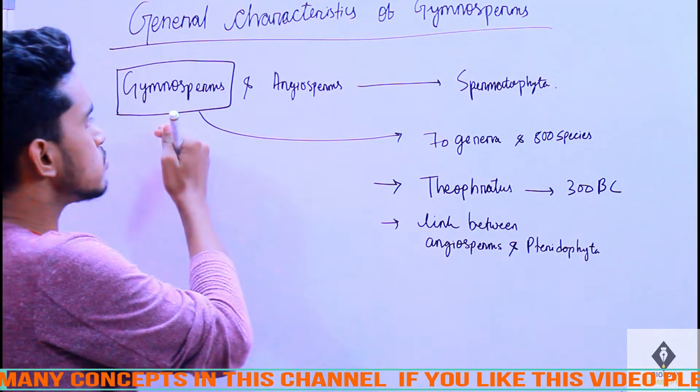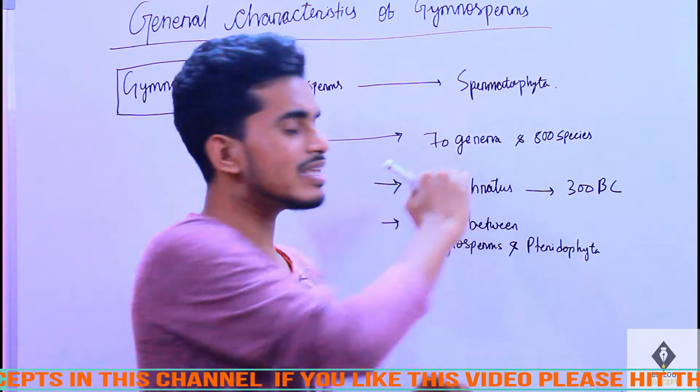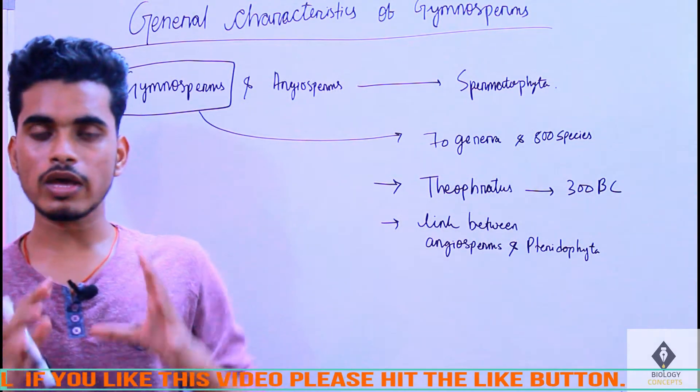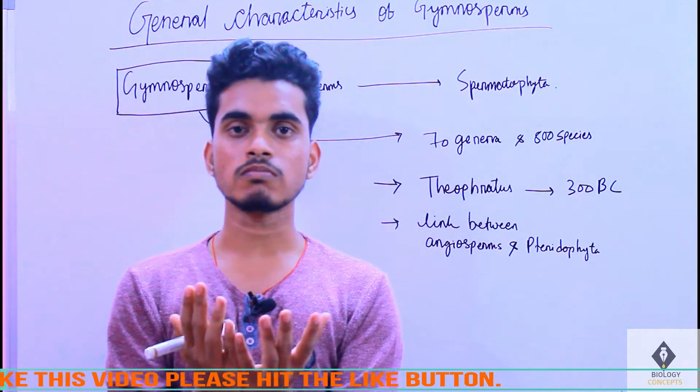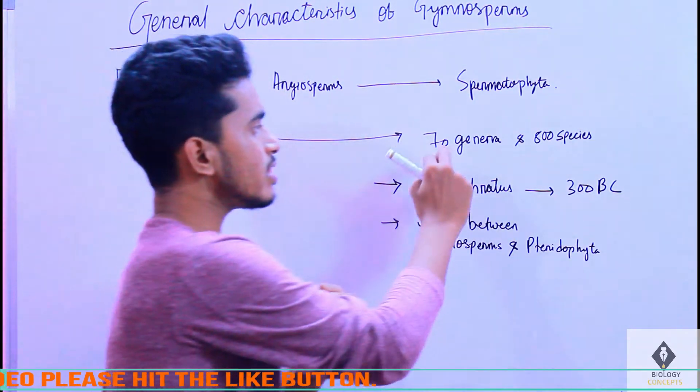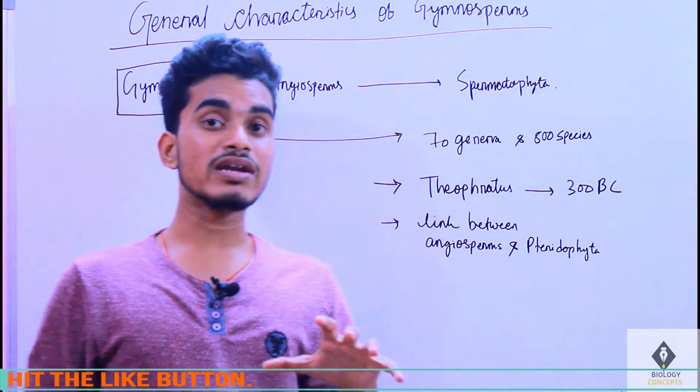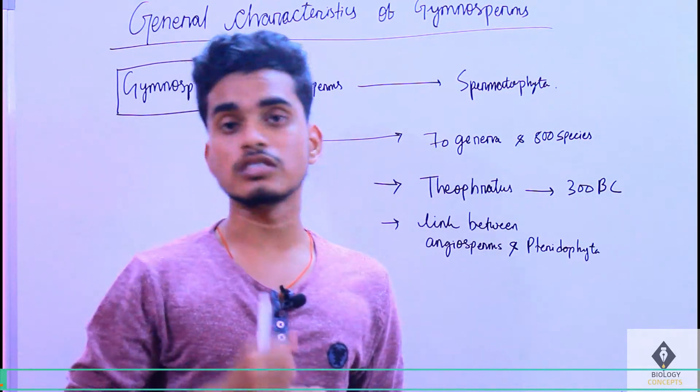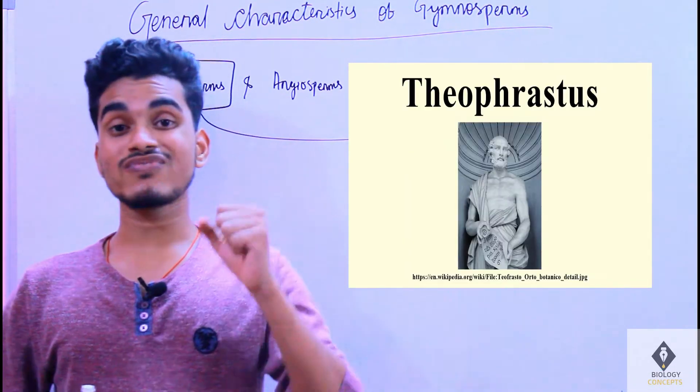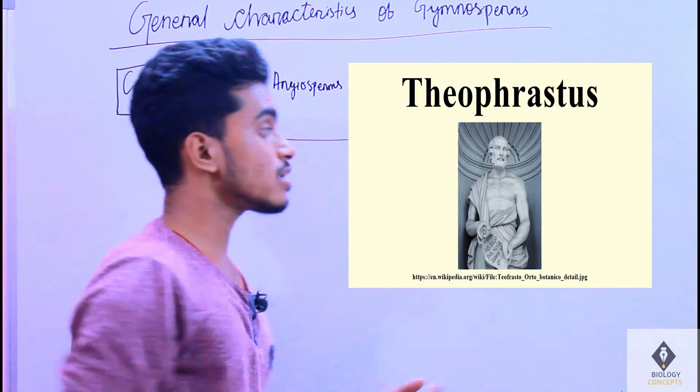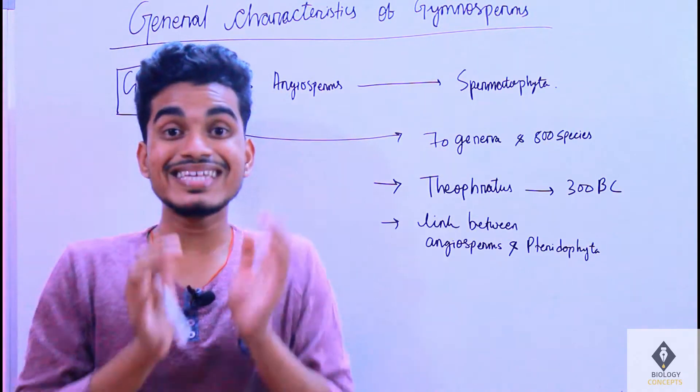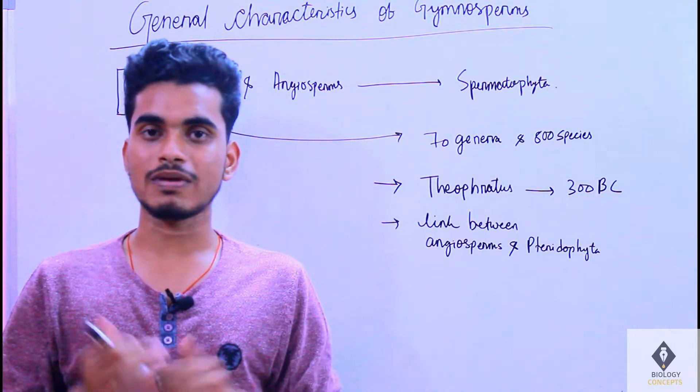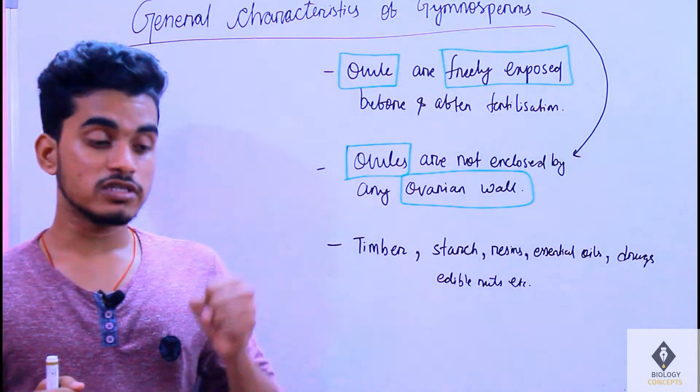Coming to the next point, gymnosperms have 70 genera and 800 species. In whole gymnosperms, we understand there are around 70 genera as well as 800 species. Gymnosperms was first termed by Theophrastus in 300 BC. These gymnosperms are intermediate between pteridophyta and angiosperms.